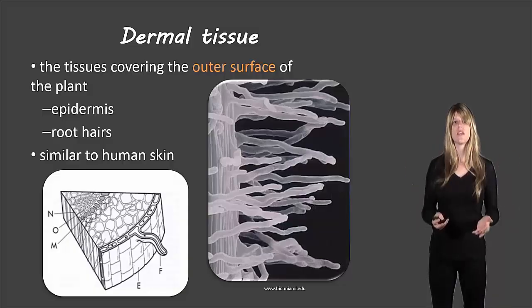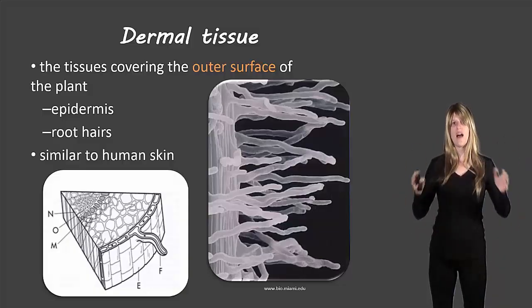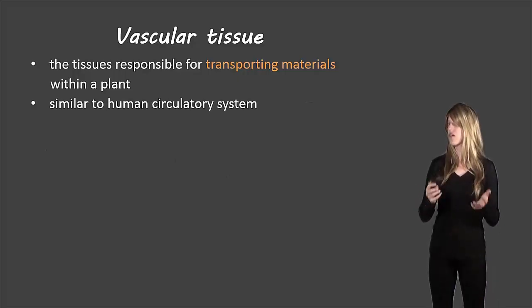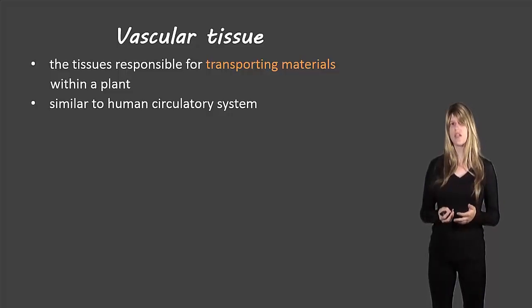The next one is vascular tissue, and this transports materials throughout the plant. This is sort of like the circulatory system in a human.